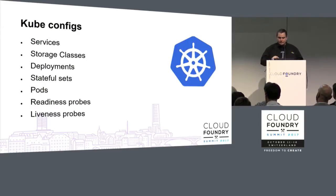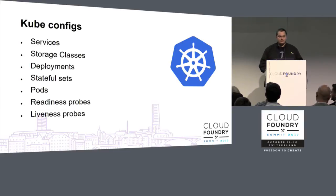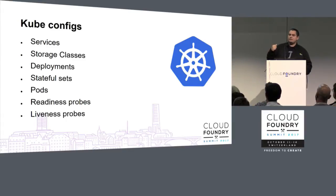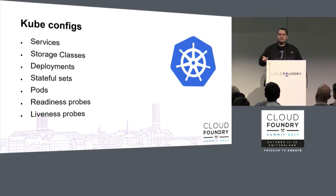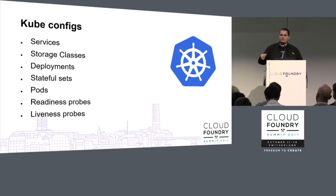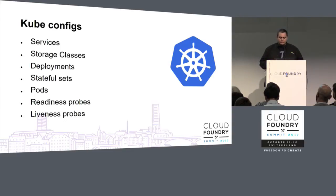We have various Kubernetes primitives that allow us to configure a deployment of Cloud Foundry. The Fissile tool that I talked about earlier not only turns BOSH releases into container images — it also creates Kubernetes configs and Helm charts. Helm charts are basically templatized Kubernetes configs that describe everything you need to stand Cloud Foundry up. So we have services, storage classes, deployments, stateful sets, probes of various kinds, and pods. I'm going to talk about a few of these in detail.